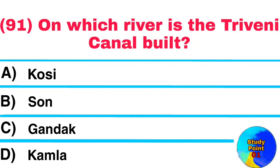Question No. 91. On which river is the Triveni Canal built? Answer: Gandak.